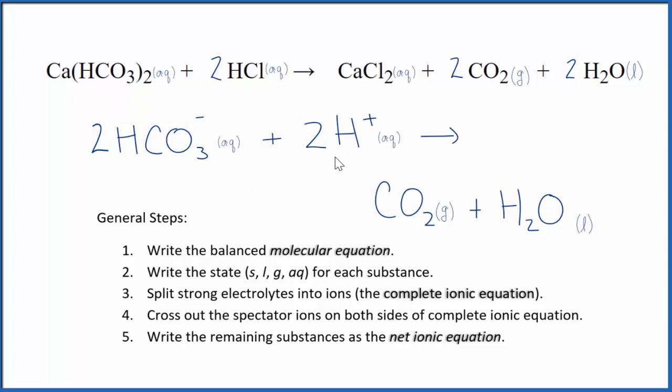You'll note that charge is conserved. We have 2 times 1 minus, that's 2 minus. 2 times 1 plus is 2 plus. The 2 minus and 2 plus give us a net charge of 0. Over here, these are neutral, net charge of 0. Charge is conserved, and if you count the atoms up, they're balanced as well.